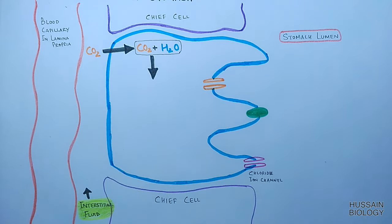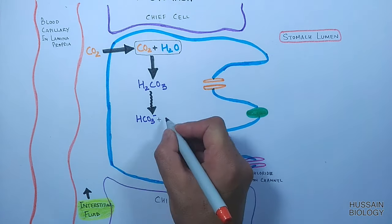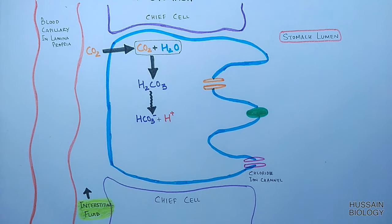This carbonic acid is readily dissociated into its ions: bicarbonate ion and a proton (H+). So finally we get HCO3- and H+.